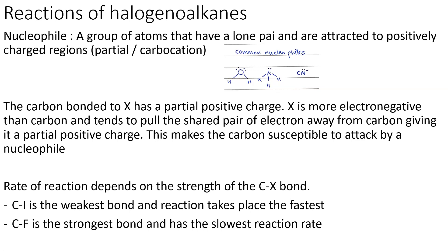The rate of reaction depends on the strength of the carbon-X bond. Carbon bonded to iodine has the weakest bond and the reaction takes place the fastest. Carbon bonded to fluorine has the strongest bond and the slowest reaction rate. Bond strength decreases from fluorine to iodine because the size of the anion increases, increasing the distance between the nucleus and the shared pair of electrons, decreasing the attraction, and thus reducing the energy required to break the bond.